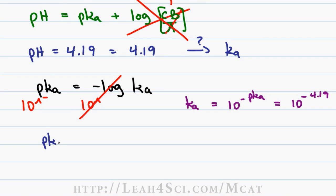A nice and clean number like 4 would give us a Ka value of 1 times 10 to the minus 4, but we also have to account for that 4.19, so we're definitely looking for a number very close to 1 times 10 to the minus 4.